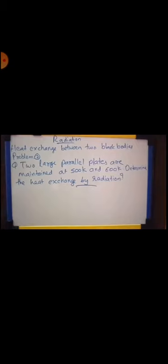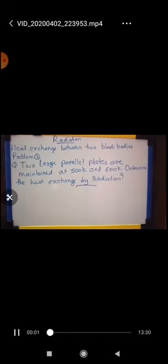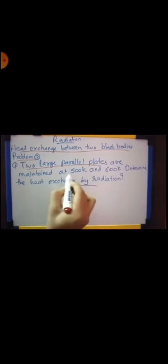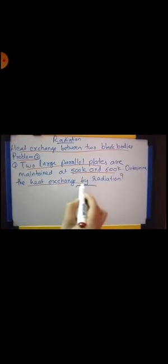Two large parallel plates maintained at 500 Kelvin and 600 Kelvin. Determine the heat exchange by radiation. This is the problem - heat exchange between two black bodies, problem number 2. It is given that there are two large parallel plates whose temperatures are given, and we have to find out the heat exchange by radiation.